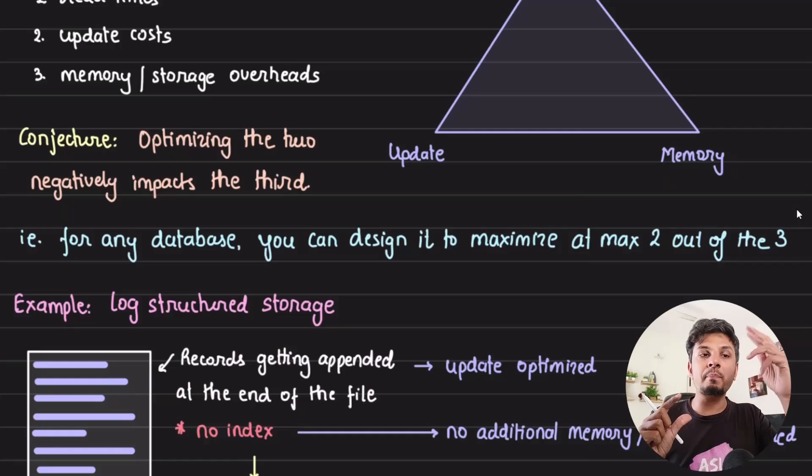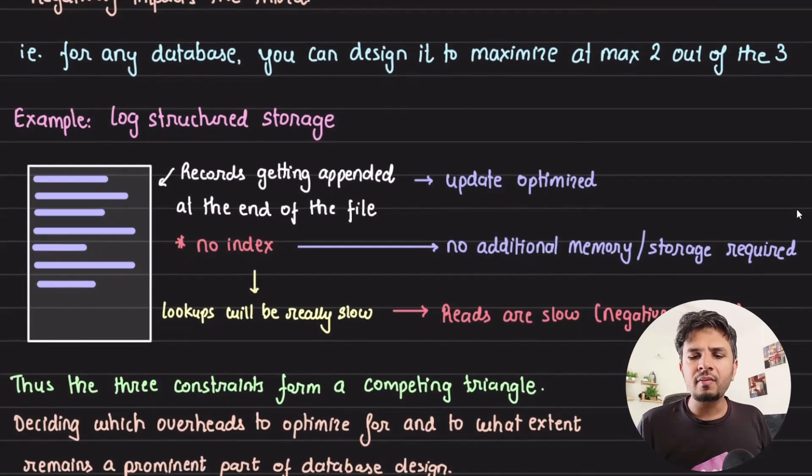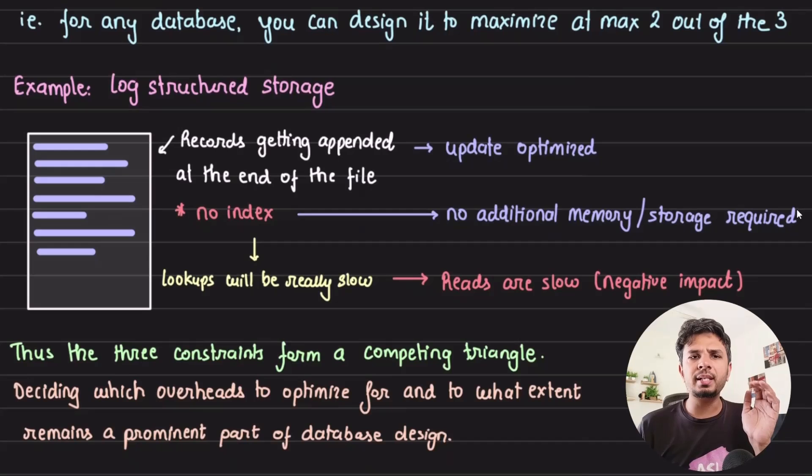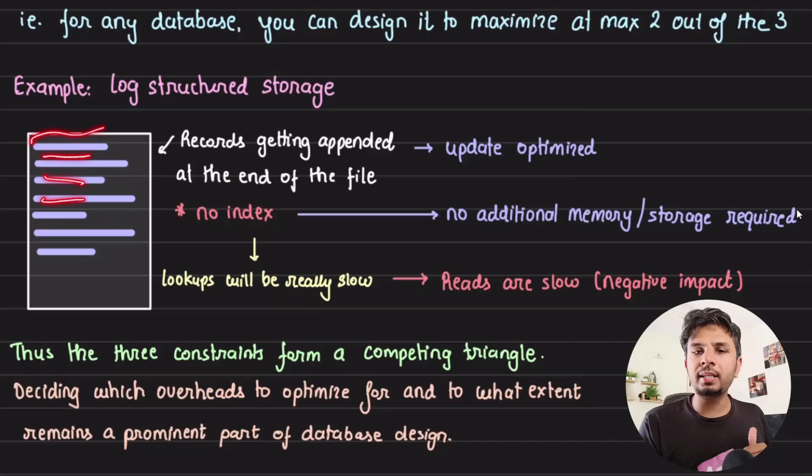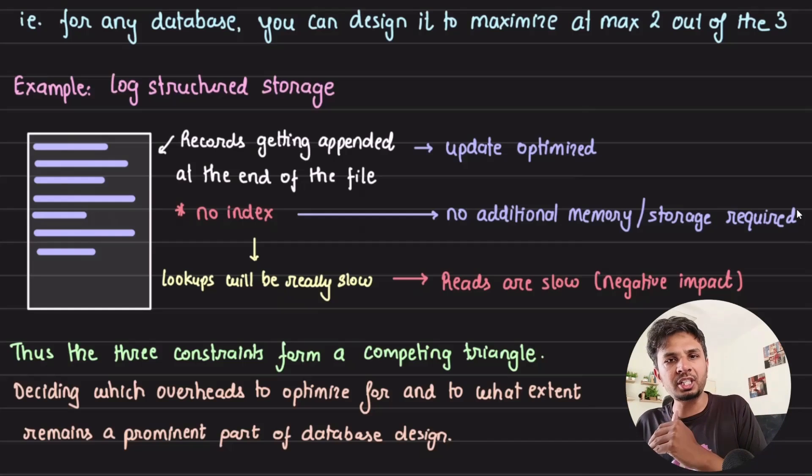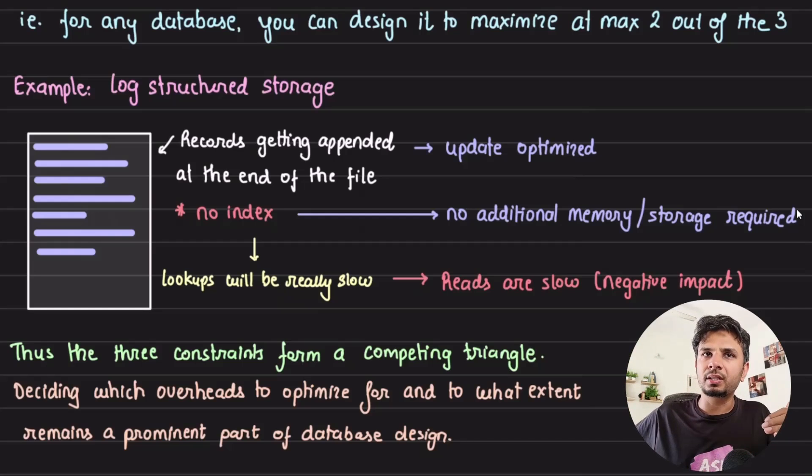Let's take a practical example. Say we're designing a database in a log-structured format, where whenever I'm inserting a record, they're simply getting appended in the file one after another. Because records are getting appended, updates are highly optimized. If we want to minimize the storage requirement, we give up on an additional index we would create on top of this.